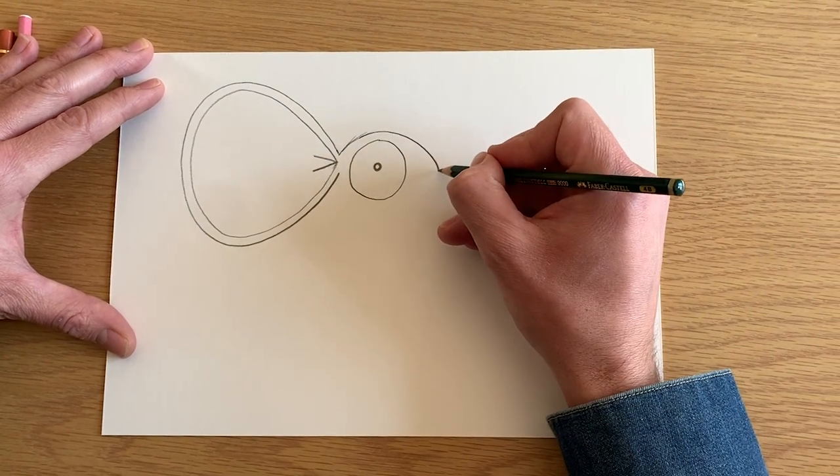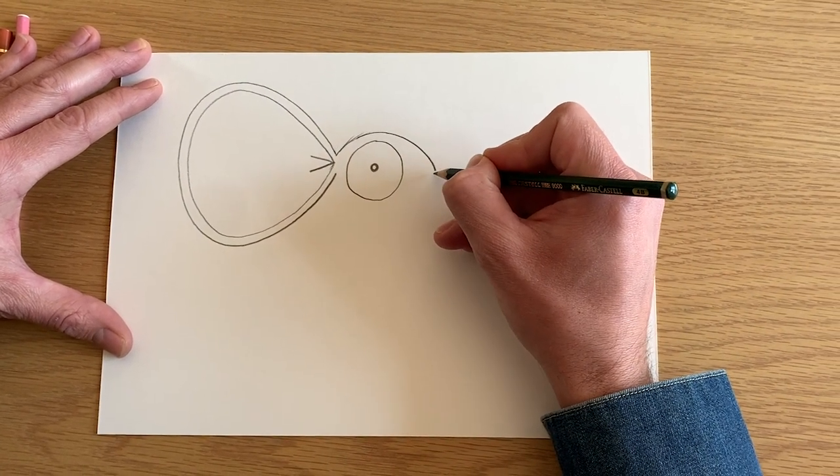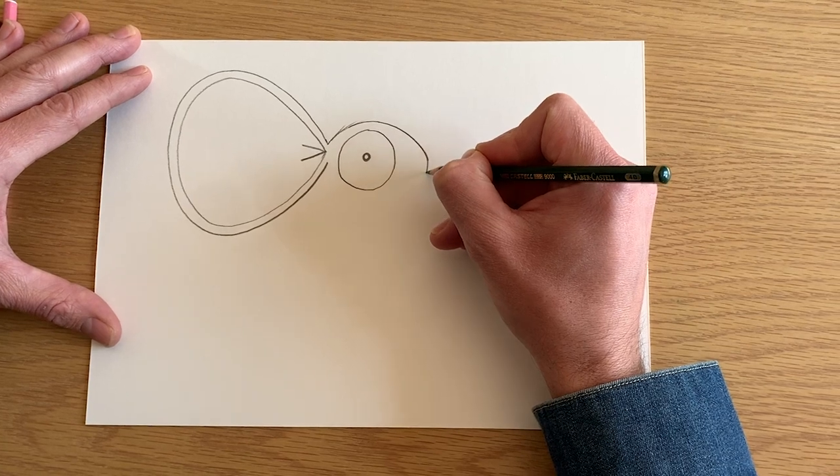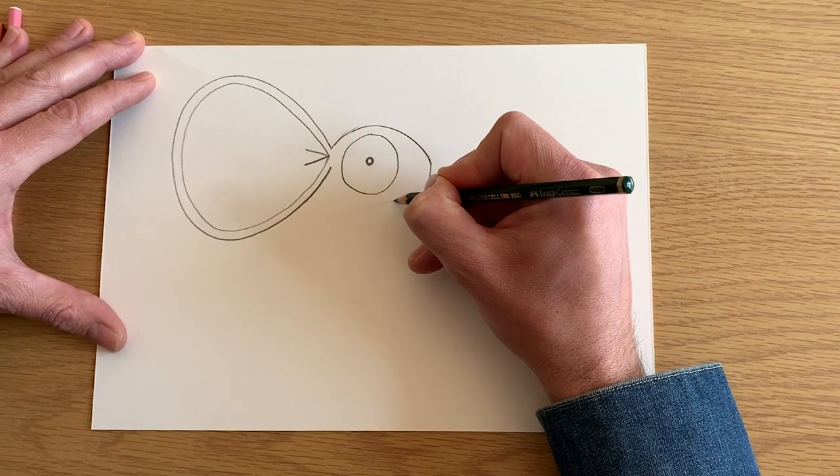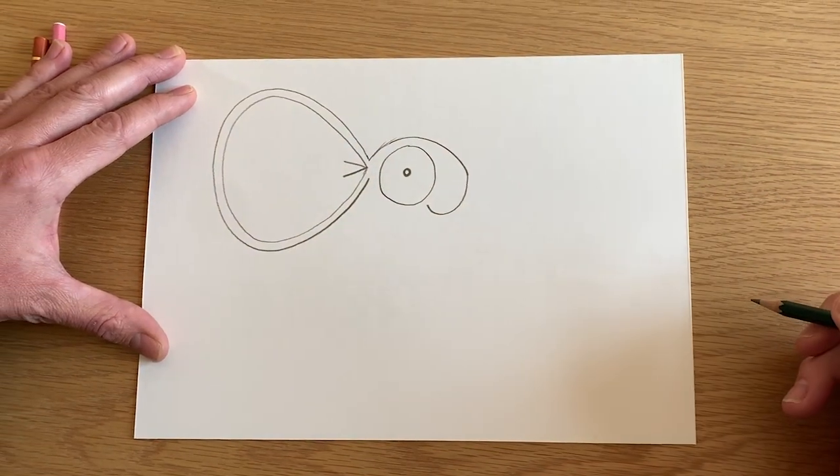All right, now we're going to draw. Follow this line around a bit further and you do a curve up for his little mouth.